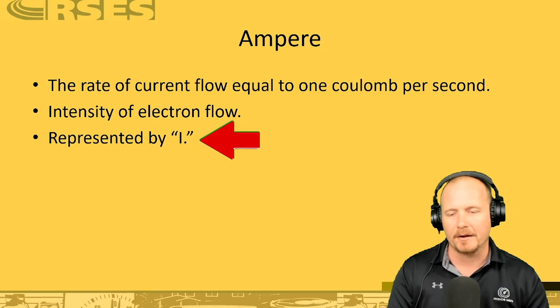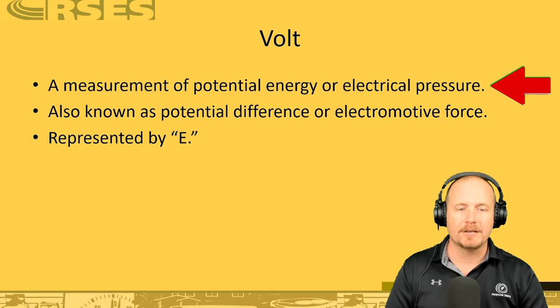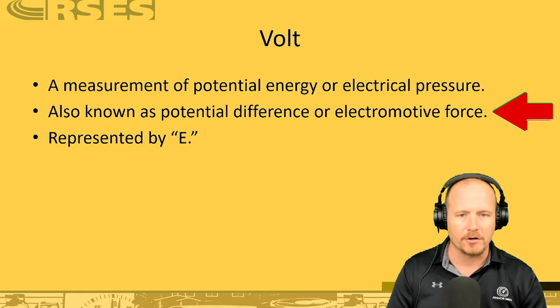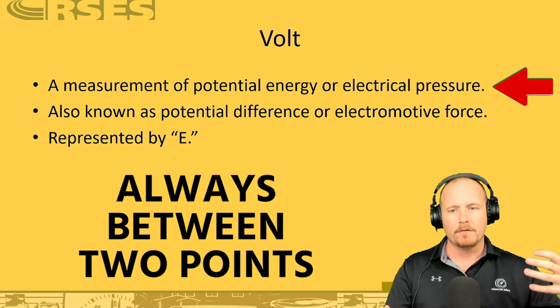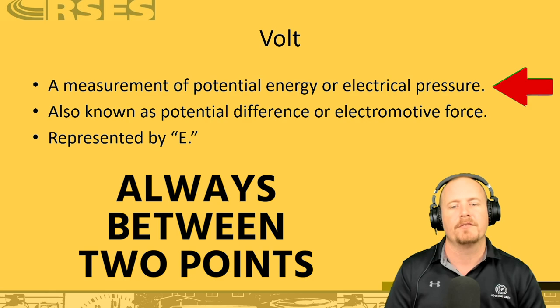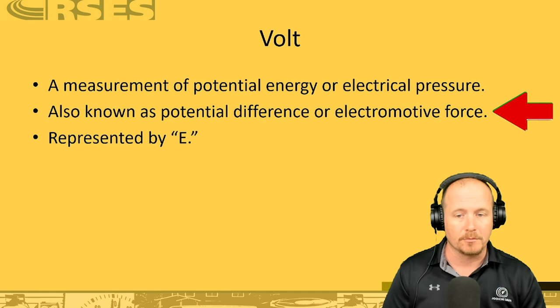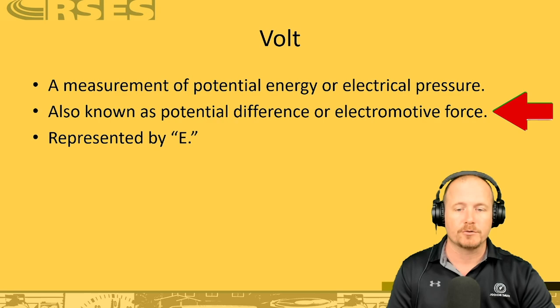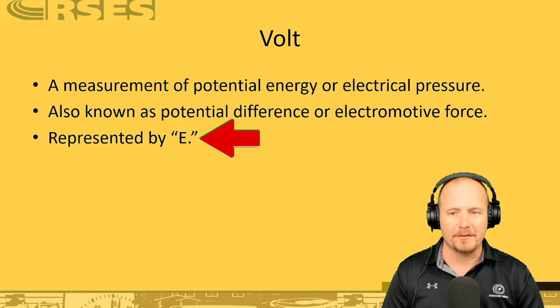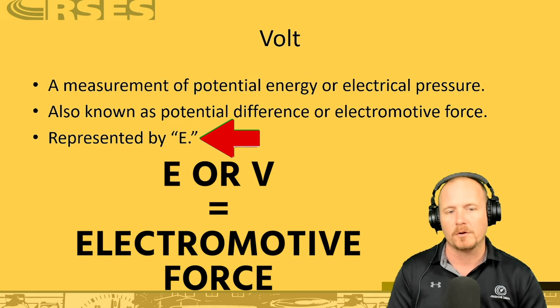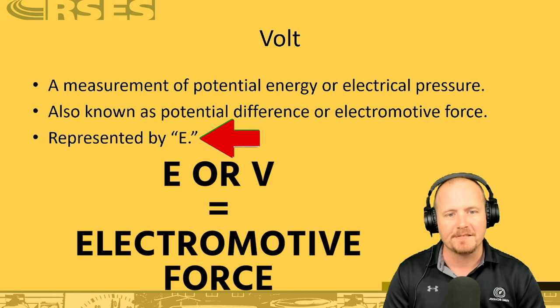A volt is a measure of potential energy — some people say electromotive force. It's like a force or pressure, a measurement of stored-up energy, and it's always between two points. We never measure voltage in terms of a single point; it's always between two points. The actual definition is the measure of the potential energy contained in one coulomb of charge. Voltage is also called electromotive force or potential difference, and it's the force or pressure that pushes electrons through an electrical circuit. People use the symbol E to represent voltage — think of E as electromotive force. You may also see it designated as V.